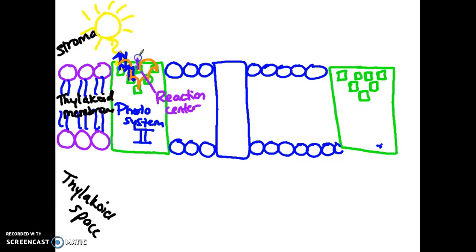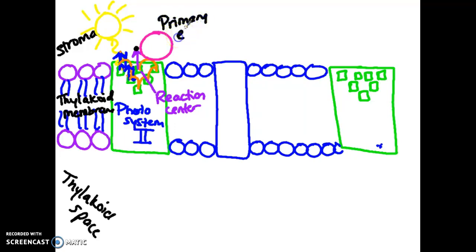At the reaction center, the chlorophyll molecule gets excited, but the electron is actually released from this chlorophyll molecule — it does not drop back down to ground state. There is a molecule ready to take that electron, called the primary electron acceptor. It accepts electrons, so hopefully the name makes sense. The primary electron acceptor now accepts this electron.